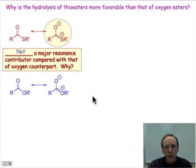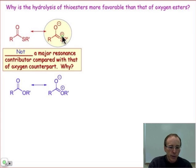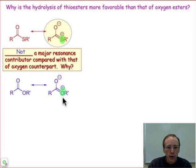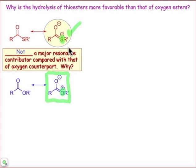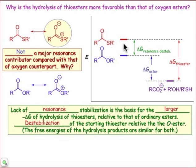Let's talk about the thiol ester group and see why it differs from the normal ester. If we write the second-best resonance contributor, in the case of the thiol ester we have sulfur bearing a positive charge. Compare that to the analogous resonance structure for the normal ester — oxygen bearing a positive charge. We know that oxygen carries a positive charge better than sulfur, so this resonance contributor for the thiol ester is not a major contributor. As a consequence, on an energy diagram the thiol ester is destabilized relative to the ester functionality, and that energy of destabilization is what makes the thiol ester more reactive.